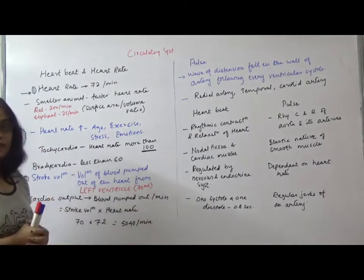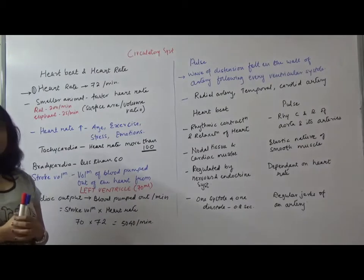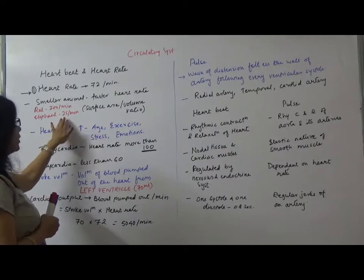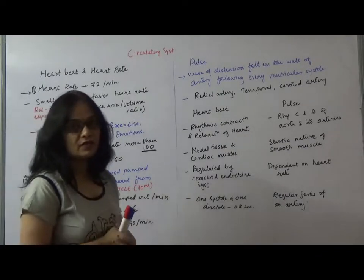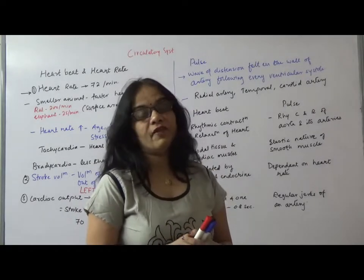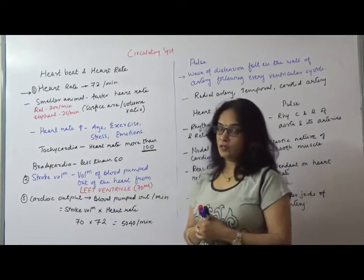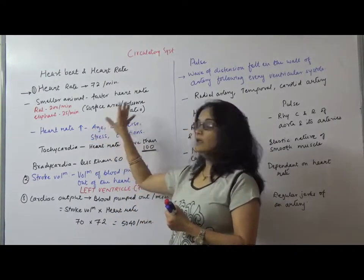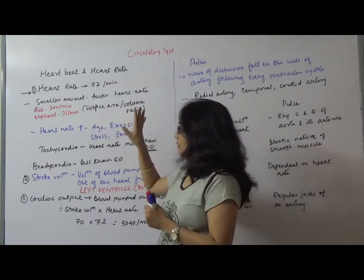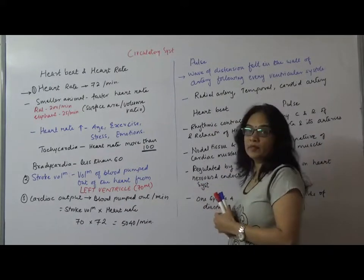Here we have to keep in mind: smaller the animal, faster is the heart rate. Why so? Because smaller the animal, the body surface area to volume ratio is lower. The metabolic activity is fast. The cells are efficient and need immediate supply of oxygen. That is why smaller the animal, faster is the heart rate. Oppositely, larger the animal, slower will be the heart rate.